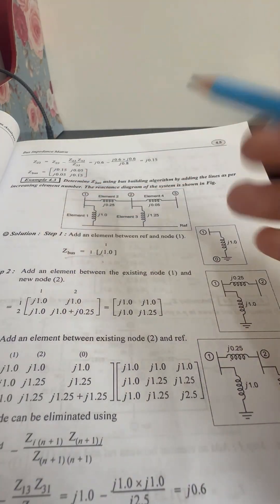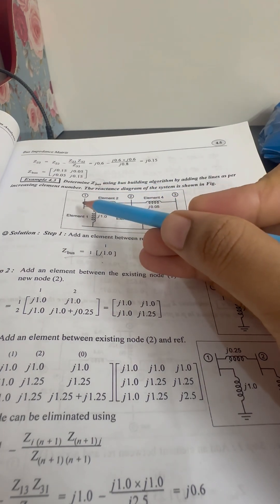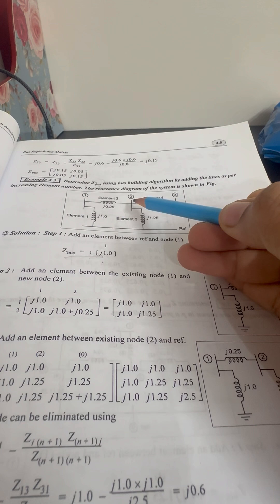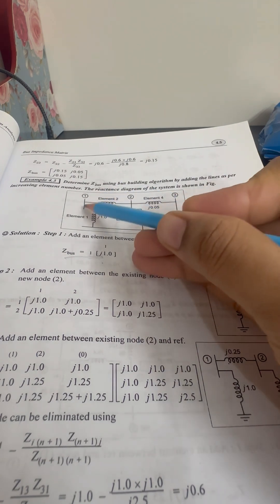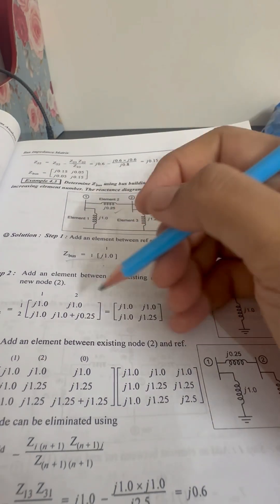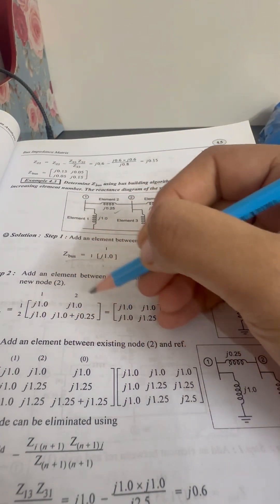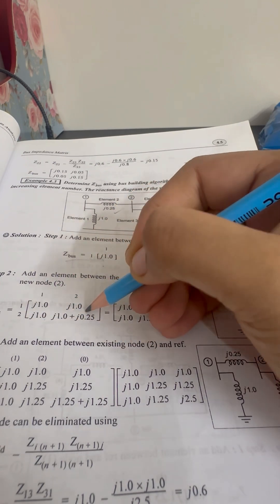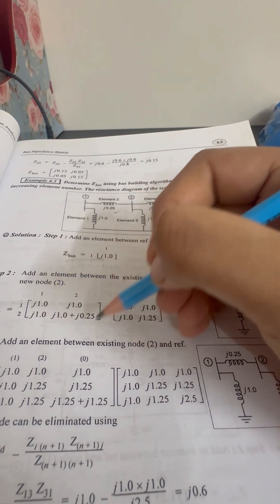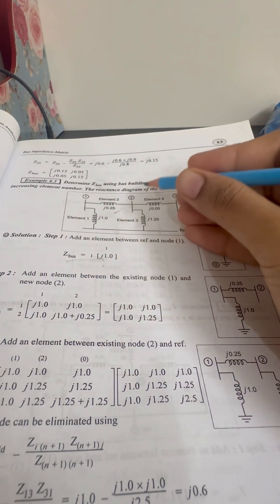Step 2, we have to connect the bus 2 to bus 1 with an impedance value J0.25. The order of the bus impedance matrix increases by 1. This is the bus building algorithm, what do you say?